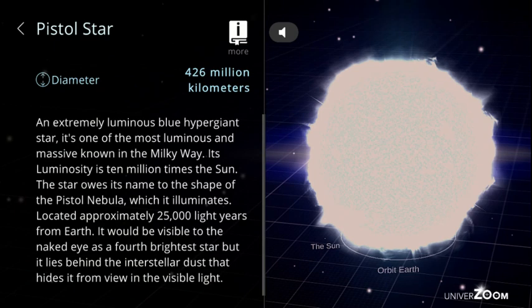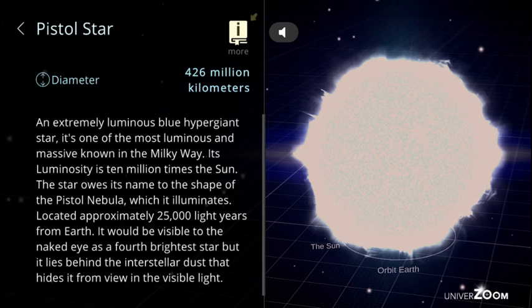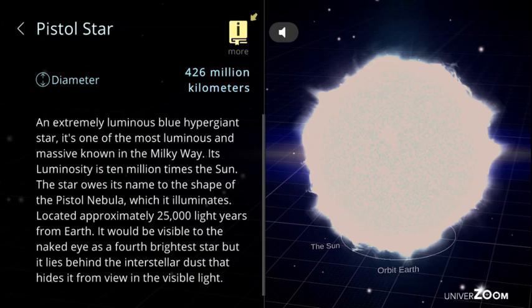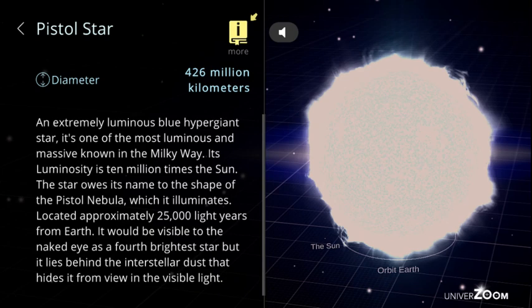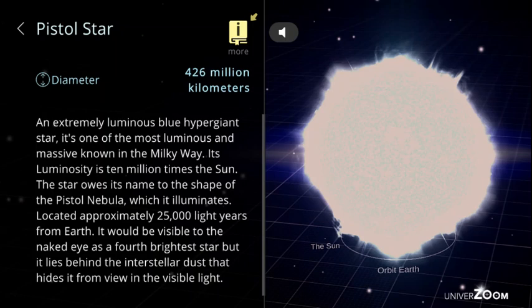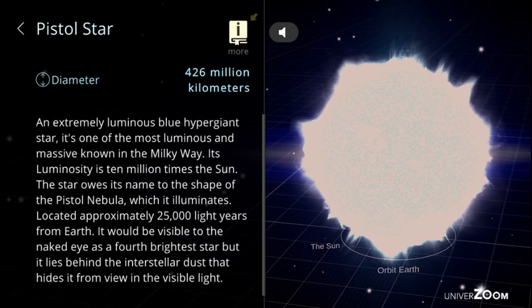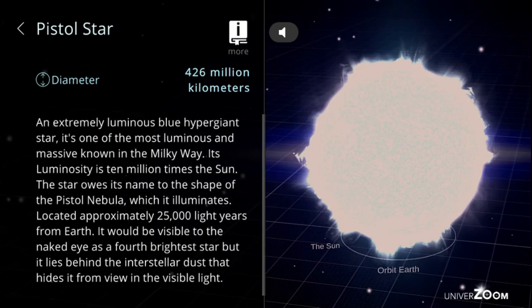Pistol star, diameter: 426 million kilometers. An extremely luminous blue hypergiant star, it's one of the most luminous and massive known in the Milky Way. Its luminosity is 10 million times the sun. The star owes its name to the shape of the Pistol Nebula, which it illuminates. Located approximately 25,000 light years from Earth. It would be visible to the naked eye as the fourth brightest star but it lies behind the interstellar dust that hides it from view in the visible light.